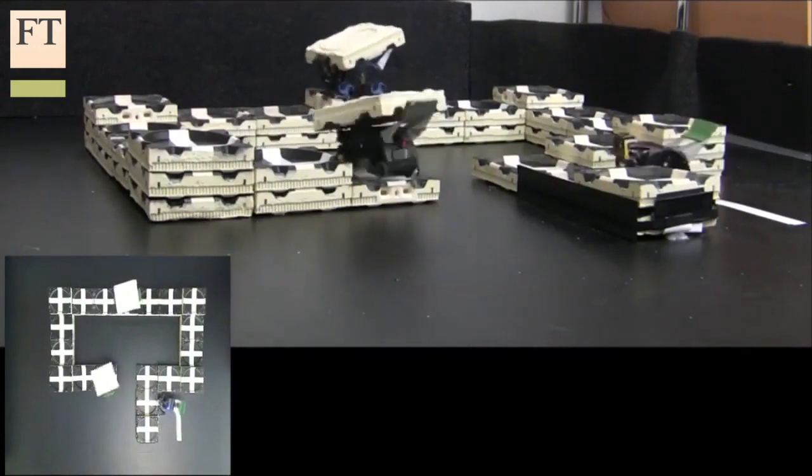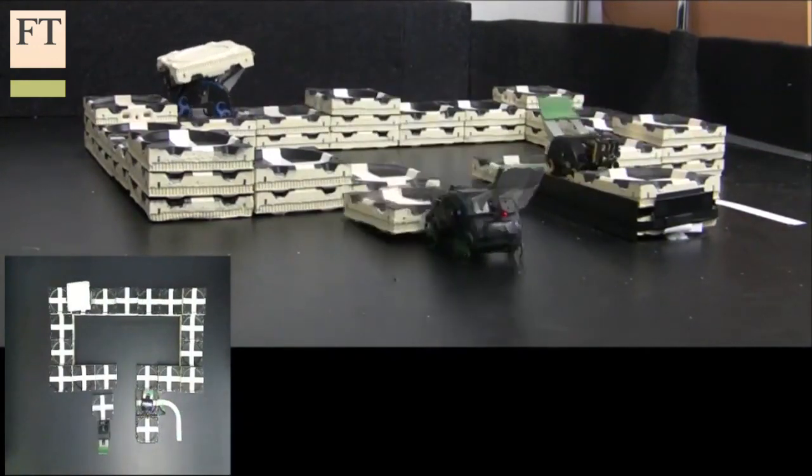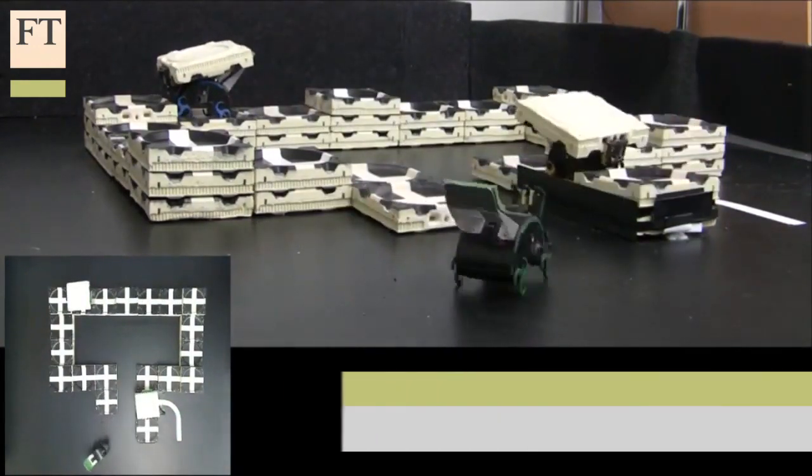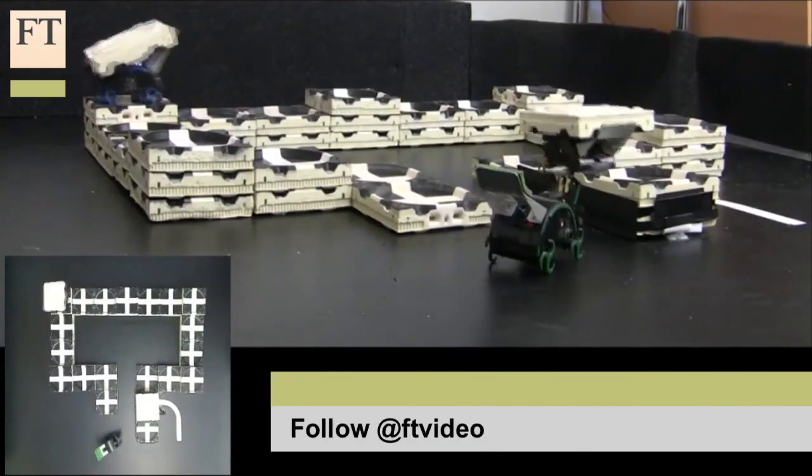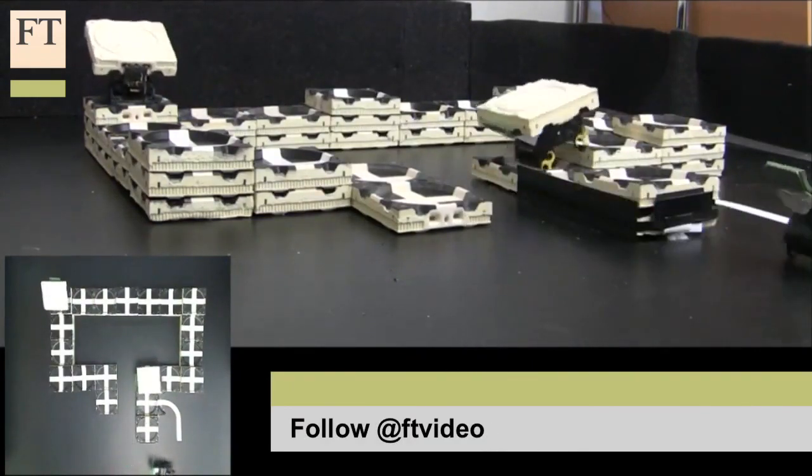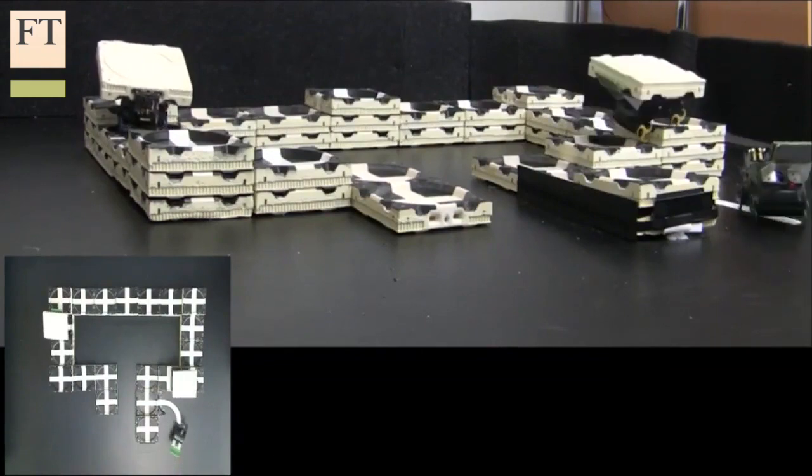Instead, the robots are fitted with infrared sensors to detect the black and white markings on the bricks and white navigation lines on the ground, plus a few very simple rules of behavior.